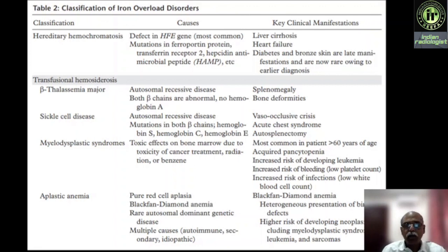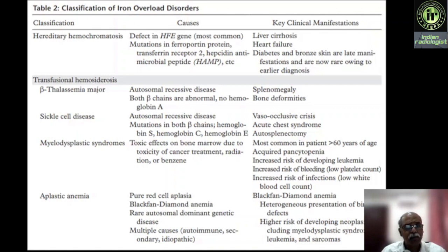Hereditary hemochromatosis is due to a defective HFE gene. The key clinical manifestations are liver cirrhosis, heart failure, and bronze diabetes — they used to call it bronze diabetes because of skin pigmentation due to the deposition of heavy metals. Transfusion hemochromatosis can occur because of repeated blood transfusions in beta thalassemia major, sickle cell disease, myelodysplastic syndromes, and aplastic anemia.